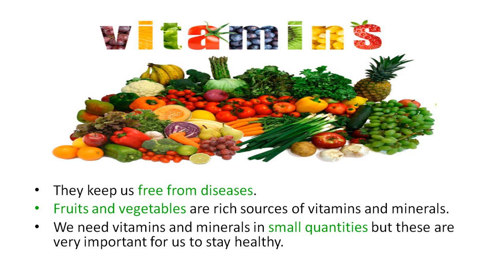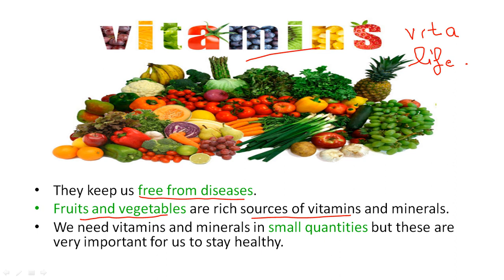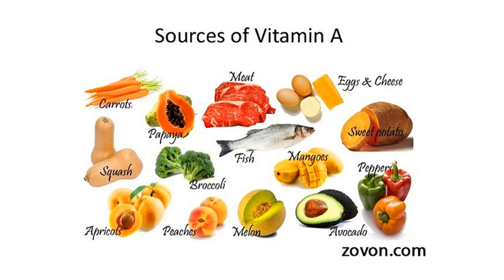Next is vitamins. The word 'vitamins' comes from the Latin word 'vita,' meaning life. Vitamins and minerals both keep us free from various types of diseases. Fruits and vegetables are rich sources of vitamins and minerals. We need vitamins and minerals in small quantities, but they are very important for staying healthy. The different types of vitamins are: Vitamin A, B, C, D, E, and K. Vitamins A, D, E, and K are fat-soluble.